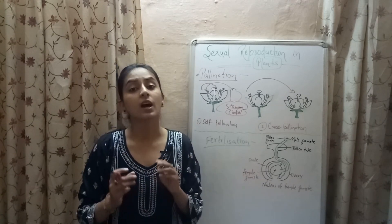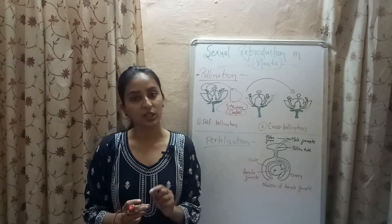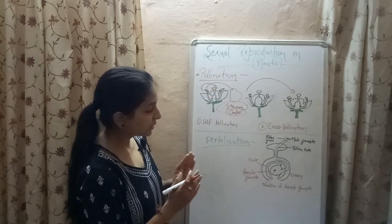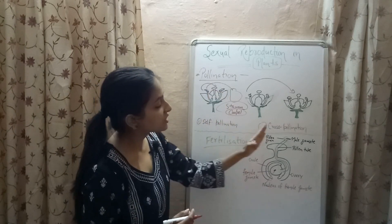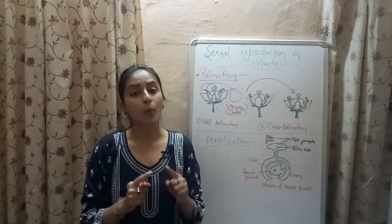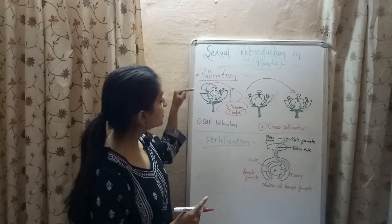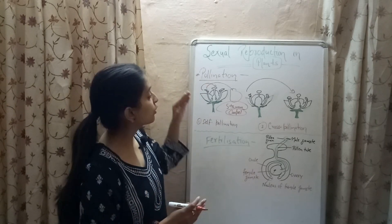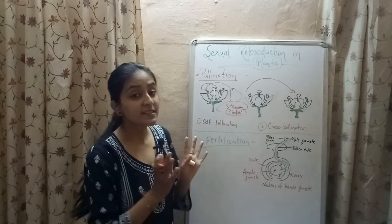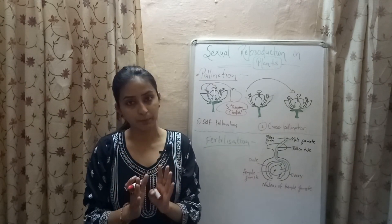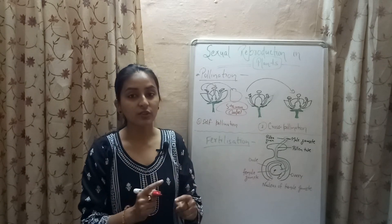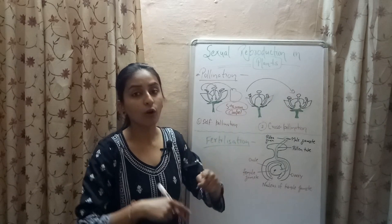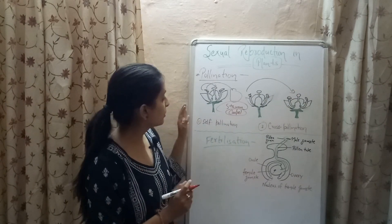Let's quickly revise pollination. Pollination is the transfer of pollen grains from the anther part of the stamen to the stigma part of the carpel. There are two types: self-pollination, where pollen grains are transferred from the anther of one flower to the stigma of the same or another flower on the same plant; and cross-pollination, where pollen grains are transferred from the anther of one flower to the stigma of a flower on another plant.